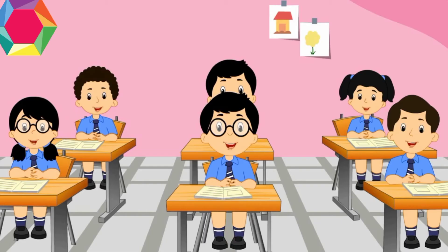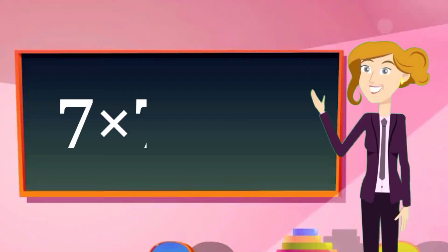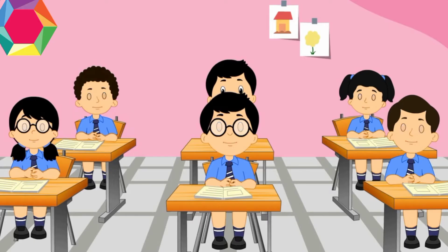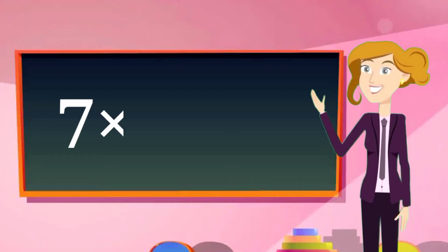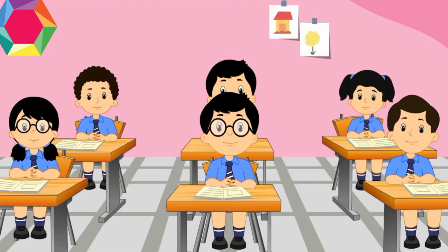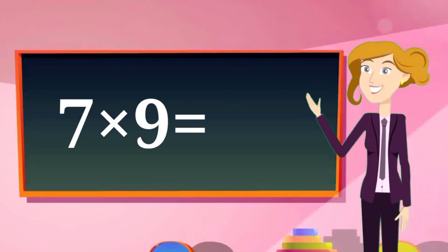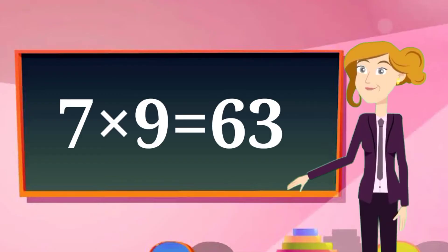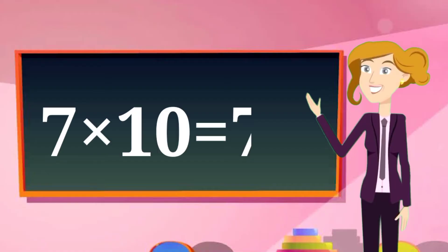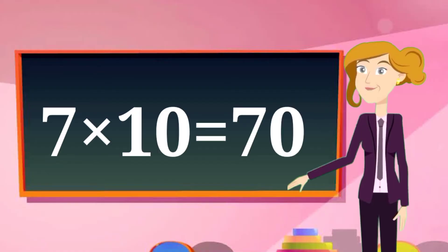7 6s are 42. 7 7s are 49. 7 8s are 56. 7 9s are 63. 7 10s are 70.